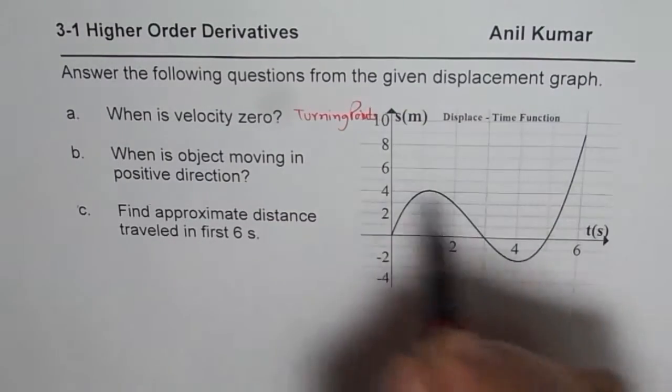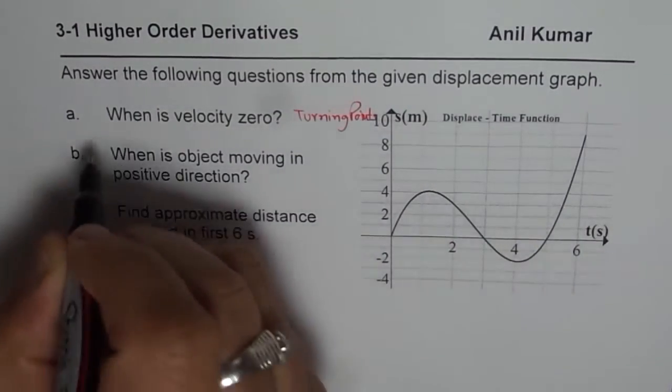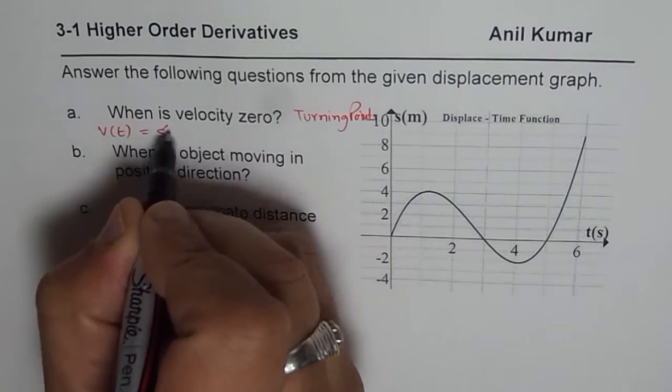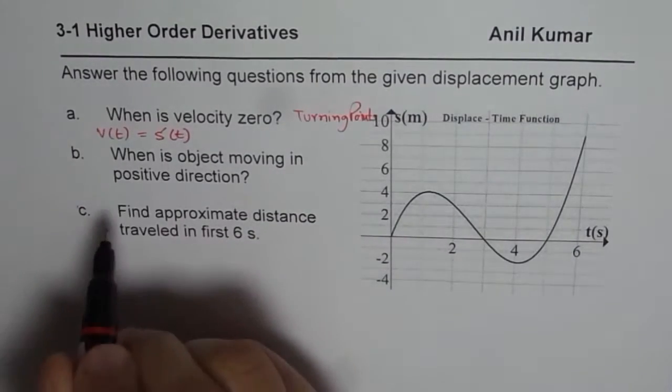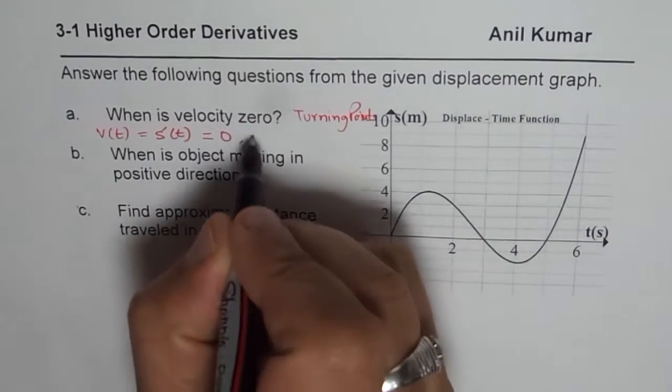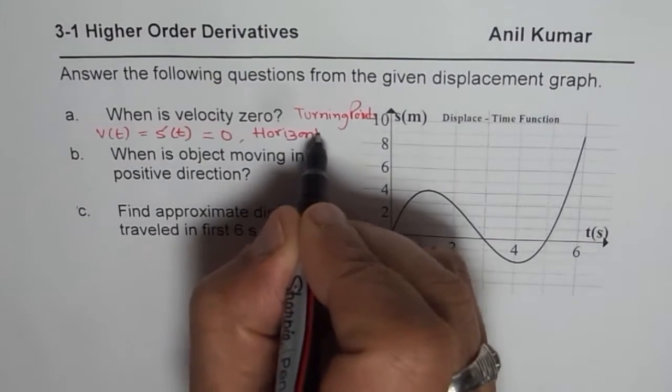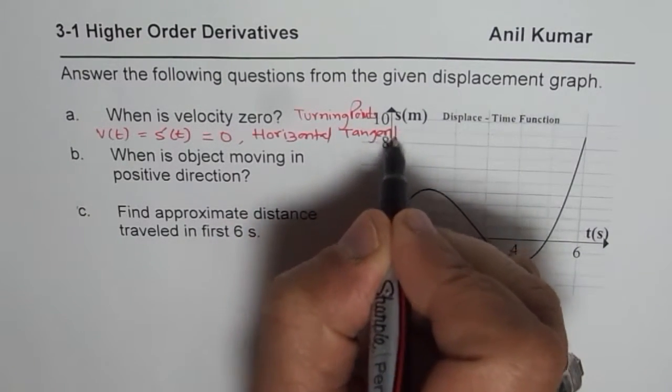So here this is displacement versus time. So what is velocity? Velocity is derivative of displacement. Velocity is 0 means derivative of 0. That means horizontal tangent. So that really means horizontal tangent. So this is how you have to understand the question.